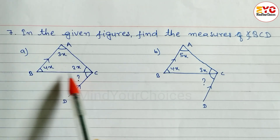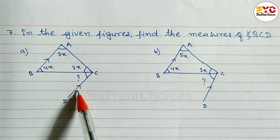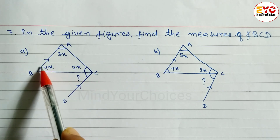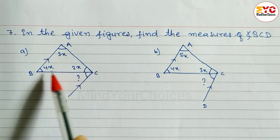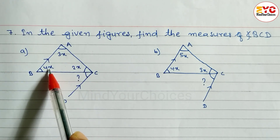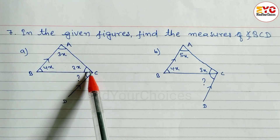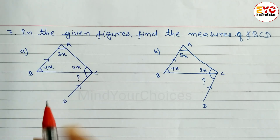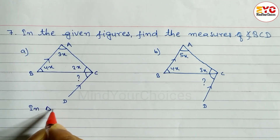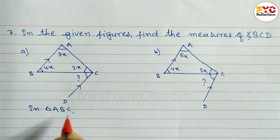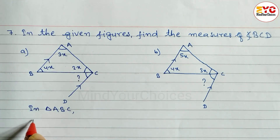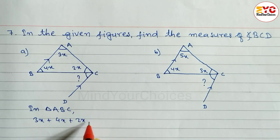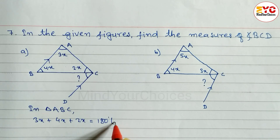Due to alternate angles, these two lines are parallel, so this angle and this angle are alternate. To find angle BCD, we first need to find angle ABC. In triangle ABC, we can write: 3x + 4x + 2x = 180 degrees.